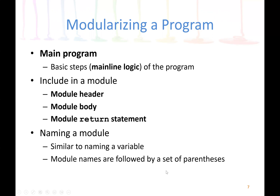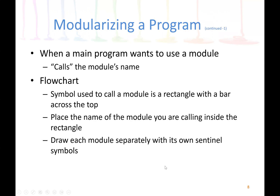Inside the parentheses is where we place the messages or data that the module or function uses to accomplish its task. Sometimes we may write a module without any arguments — for example, a function to print a string on screen likely doesn't need any data, so the parentheses will be empty. However, we still must include the open and close parentheses to tell the compiler that this is a module or function.